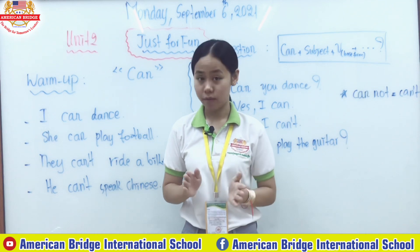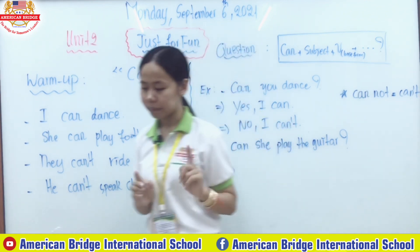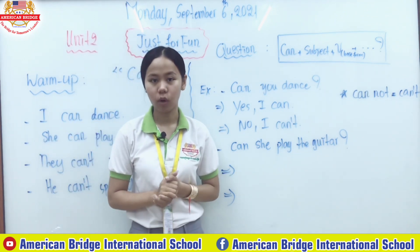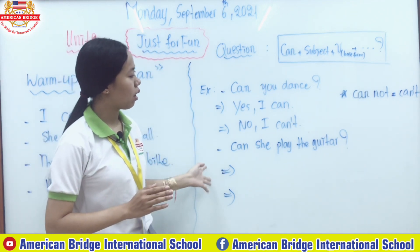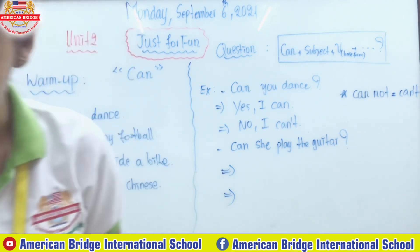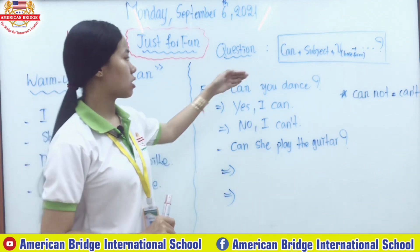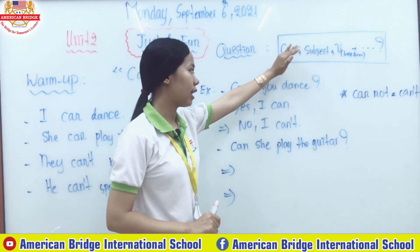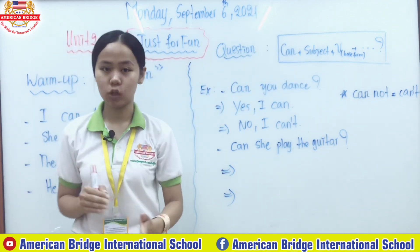Today we are going to continue with 'can' in the question form. You already know the positive and negative forms — the question form is not complicated. You just put 'can' in front of the subject. The structure is: can + subject + verb in base form + question mark.